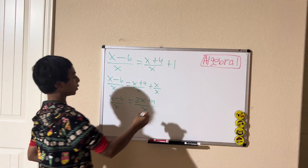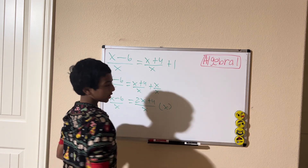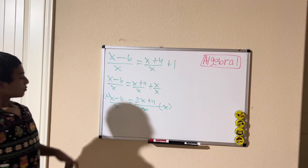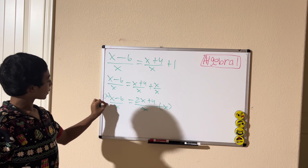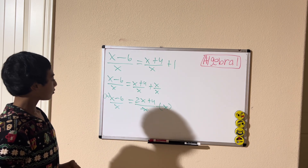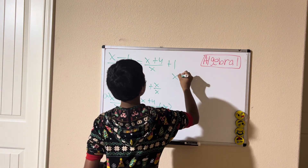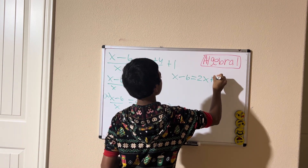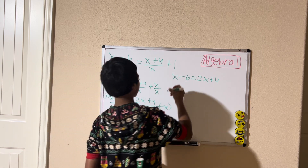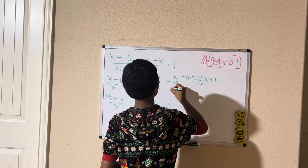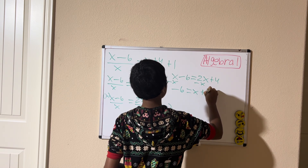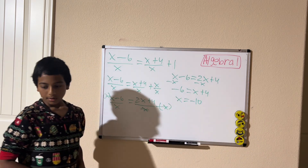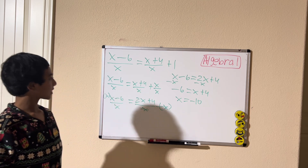Now we multiply both sides by x, which will cancel out the denominator. X divided by x cancels out and becomes 1. So what we're left with is x minus 6 equals 2x plus 4. Solving the equation for x gives us x equals negative 10.